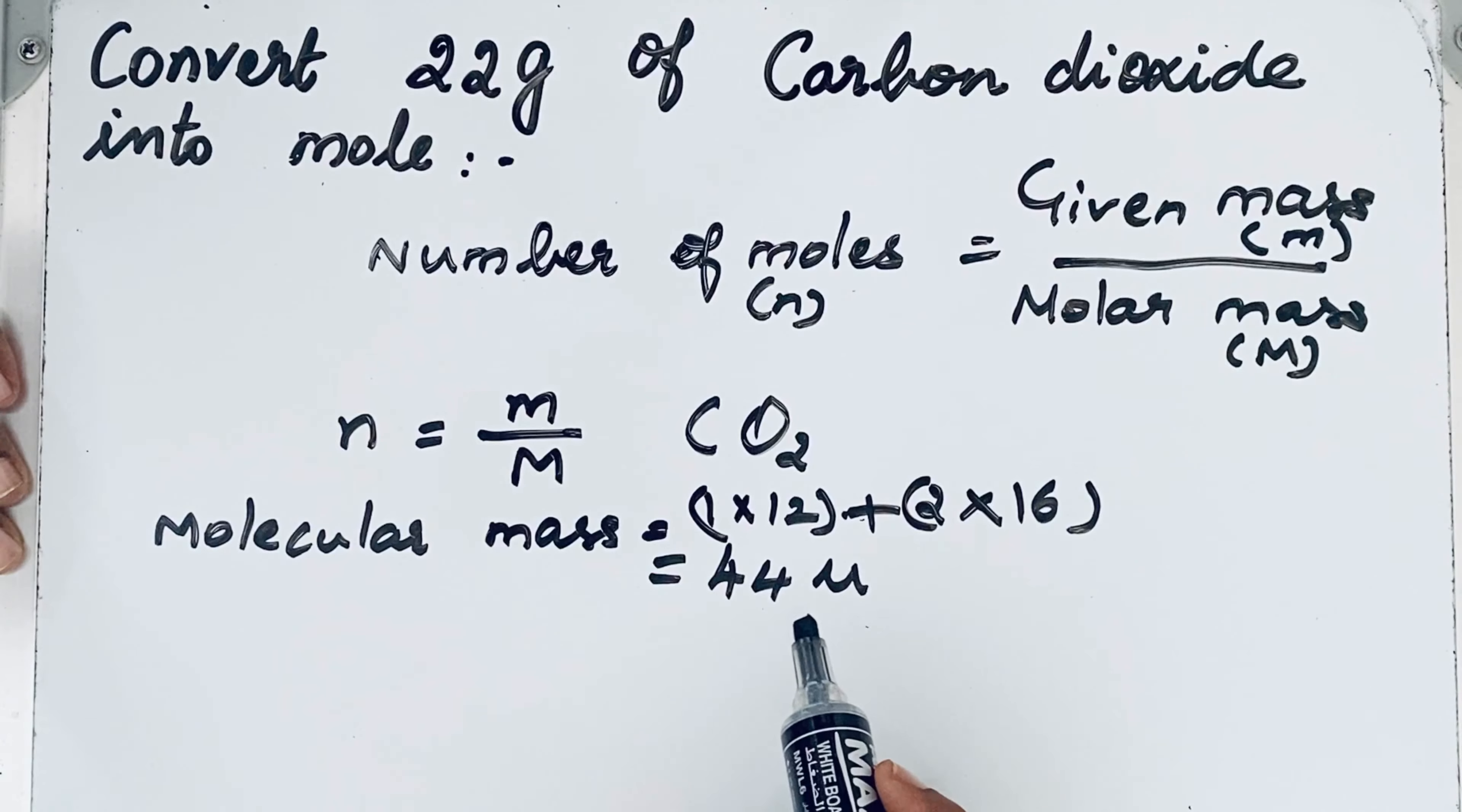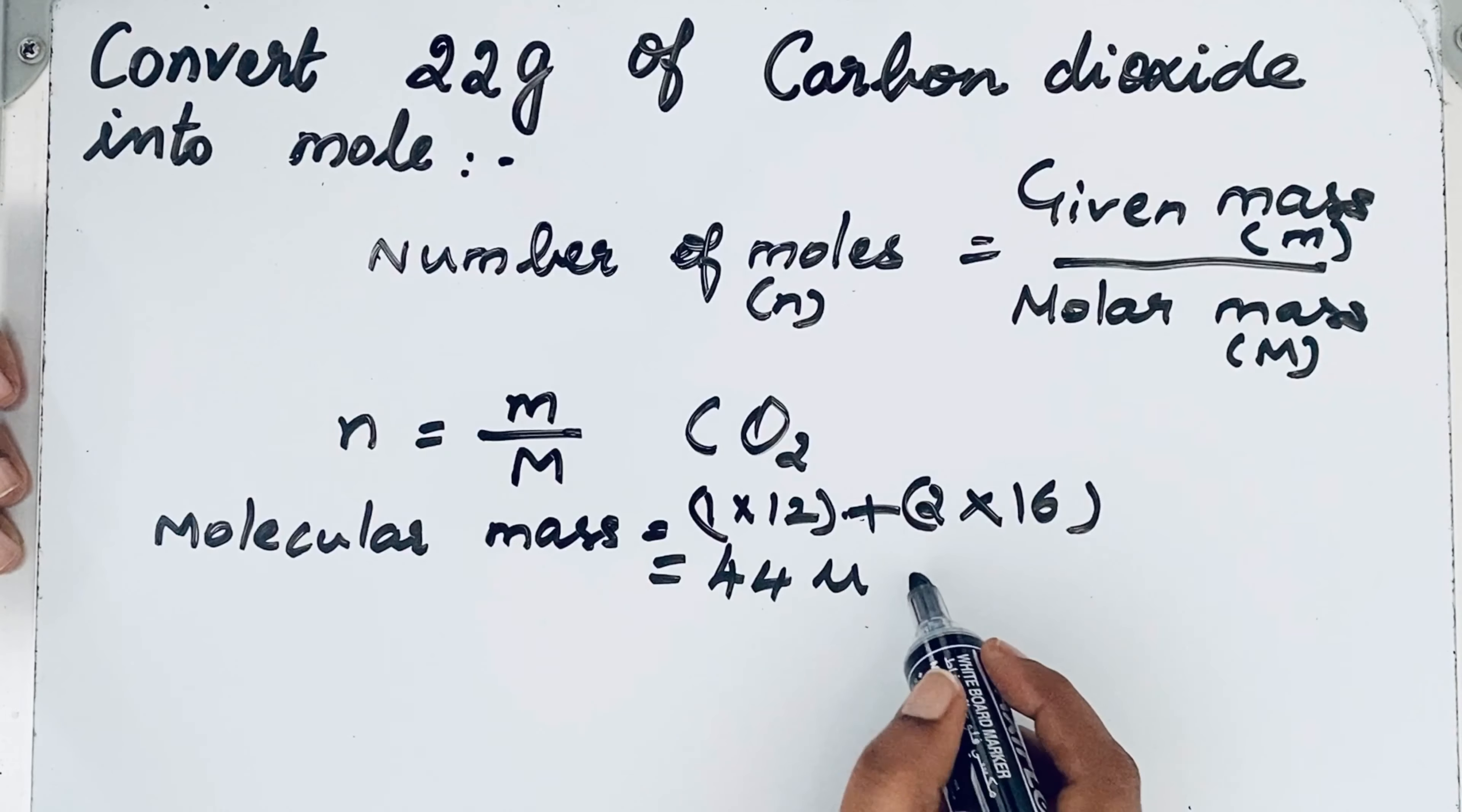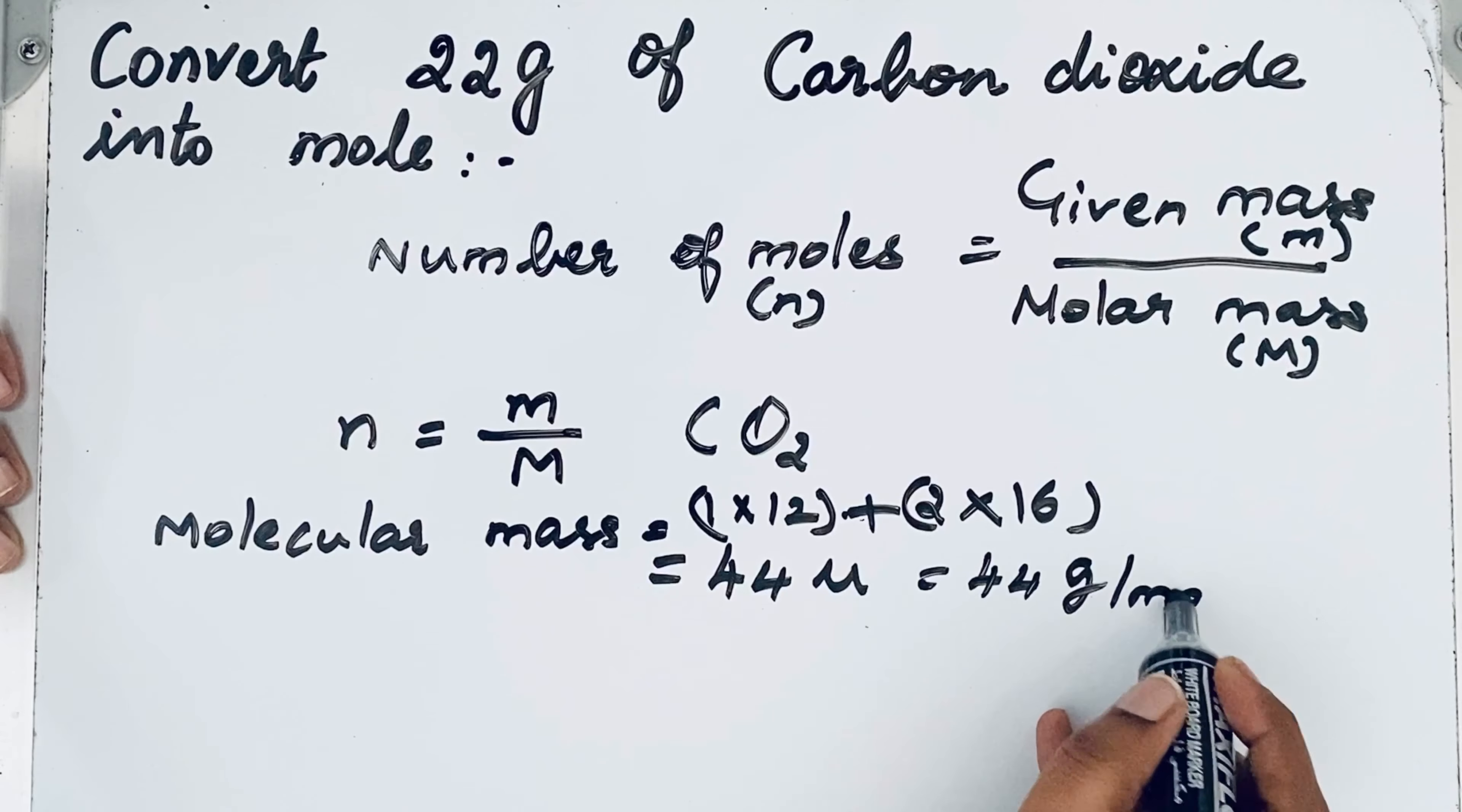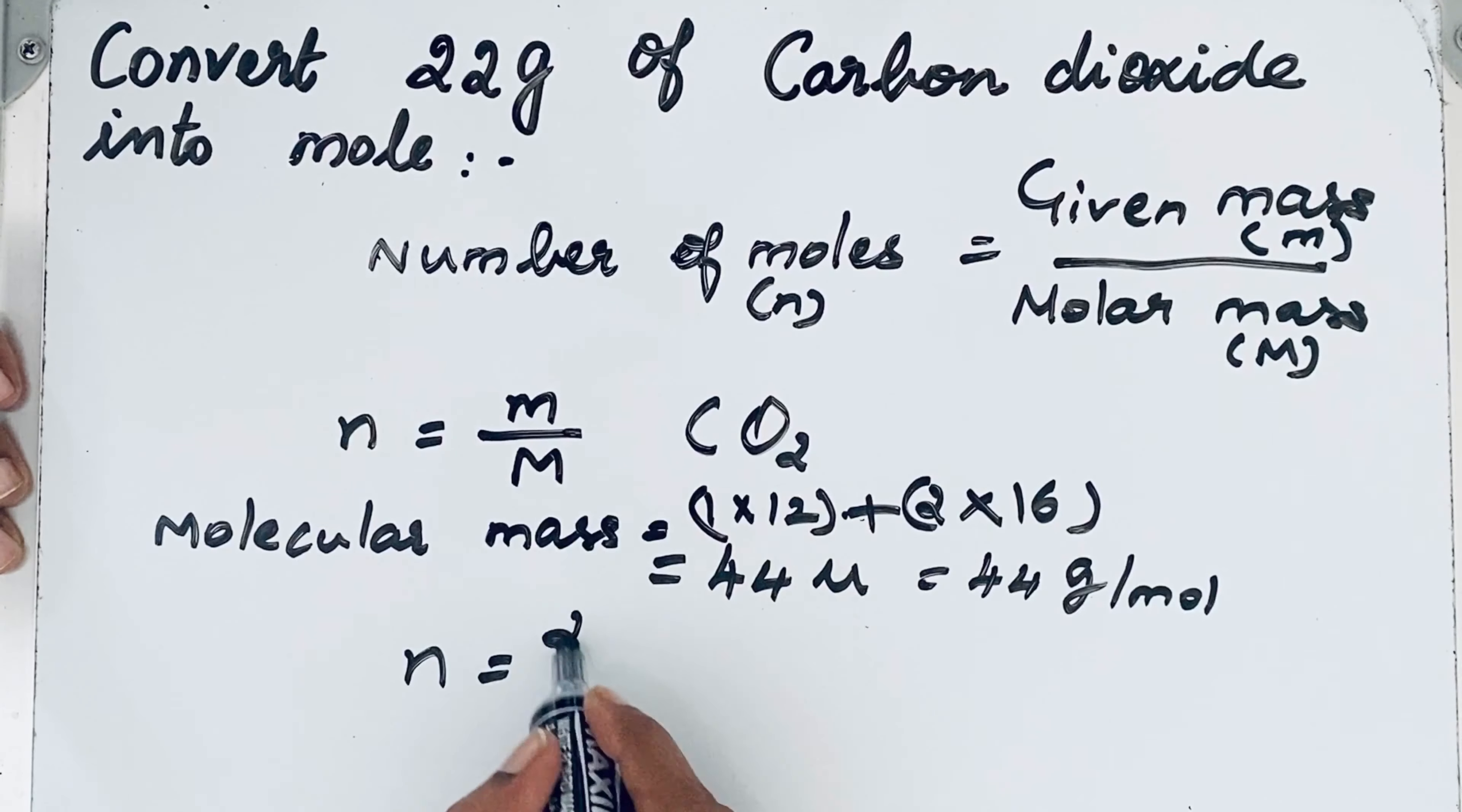This molecular mass now you should convert into molar mass. See, for converting molecular mass into molar mass is very simple. We are changing only the unit, not the numericals. So 44 gram per mole. This is molar mass. So I think we can apply all the things in the formula. So n is equal to m, is what? 22 gram divided by 44 gram per mole.